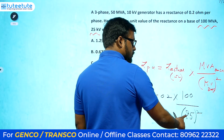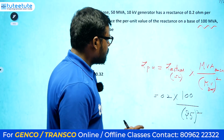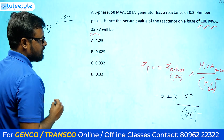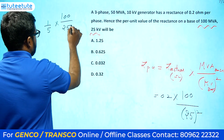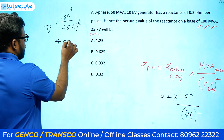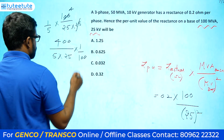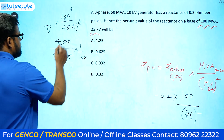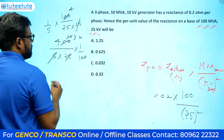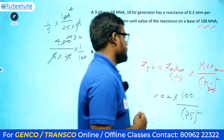Calculating: 0.2 × 100 / 625 = 20 / 625 = 0.032. So the per-unit value of the reactance is 0.032.